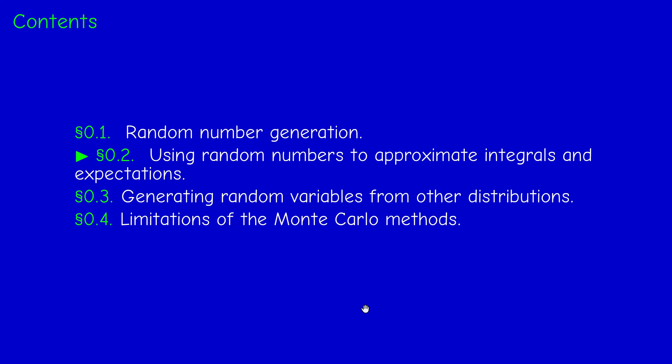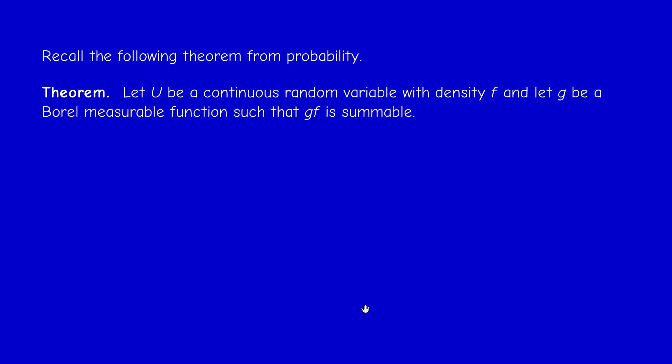In this section we shall introduce the basic idea of Monte Carlo approximations of integrals — how can we use random numbers to approximate integrals? Let us recall a result in probability: if U is a continuous random variable with density f, and g is a Borel measurable function such that g times f is summable, then the expectation of g(U) is just the integral over ℝ of g(x) times the density f(x).